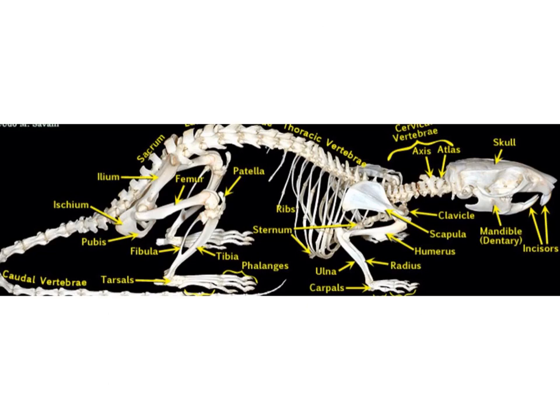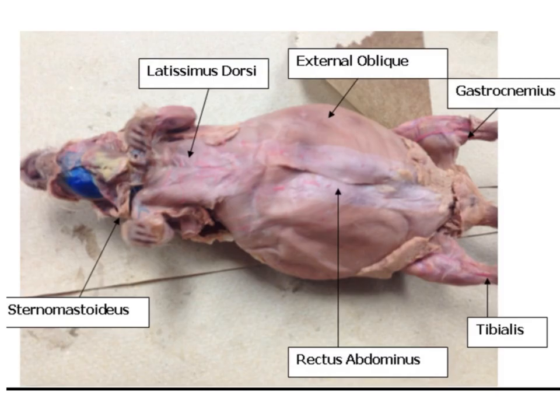In the hip area we have the sacrum as the tailbone, the ilium, the pubis forming the front portion, and the ischium — all making up the pelvic area — followed by the caudal vertebrae.